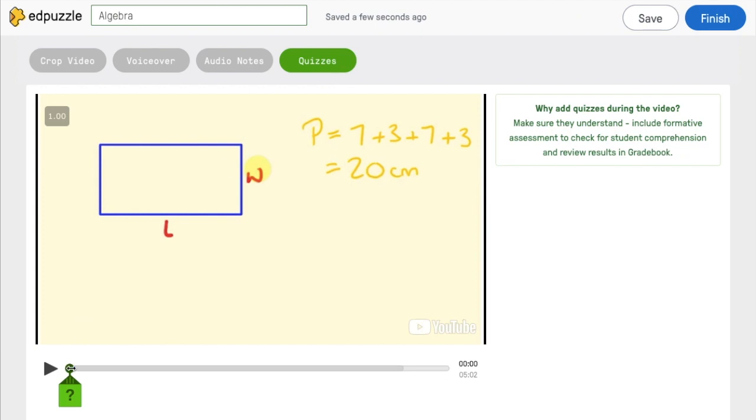And now you can choose where in your timeline that you want to place your question by dragging this across. And when you've found the right place, just click on this green question mark icon.